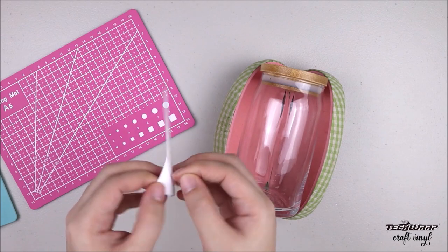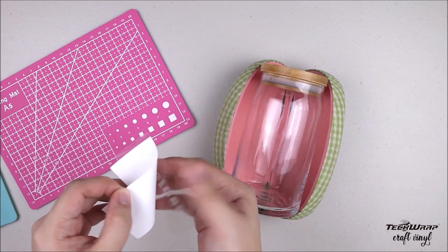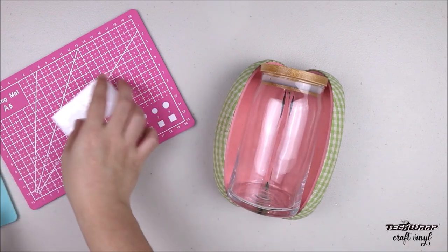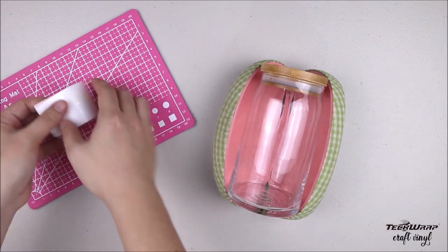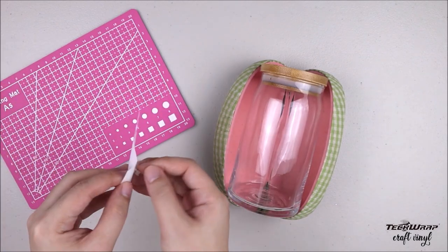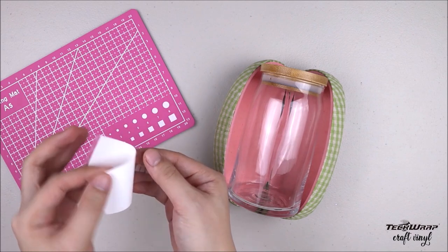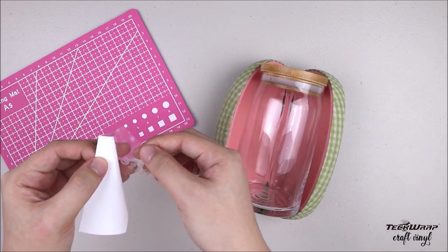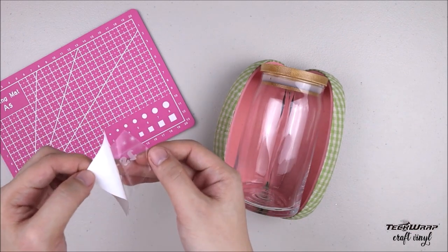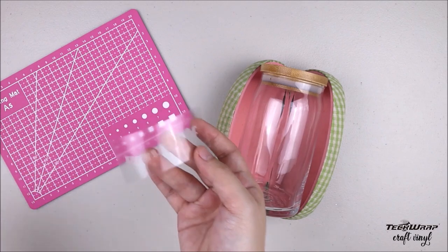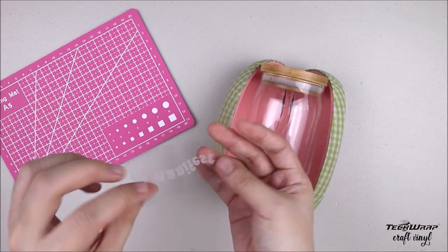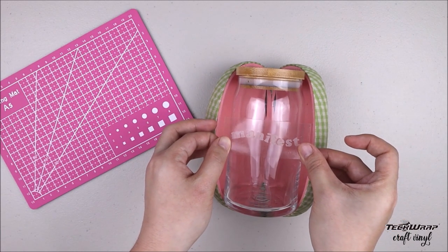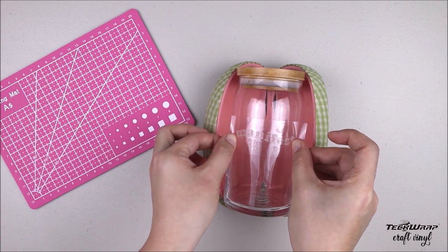Now I'm peeling the vinyl from the transfer tape and as you can see it's 90% easy to peel but sometimes there are parts that are sticking behind so you can always use your tweezers to help get that vinyl out. Then slowly place the design on top and use the squeegee carefully to burnish the design onto the glass.